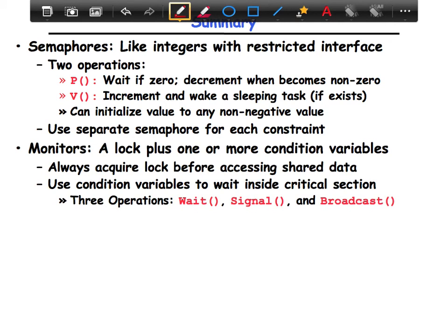Monitors are similar to conditional synchronization. They are a lock plus one or more conditional variables. Always acquire the lock before accessing the shared data. Use the conditional variables to indicate scheduling constraints and to wait inside a critical section. So they support three operations: wait, signal, and broadcast.